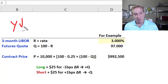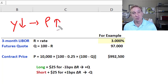Notice the inverse relationship here is directionally the same. Rate goes down, and because the quote is 100 minus R, that means the quote goes up and vice versa.